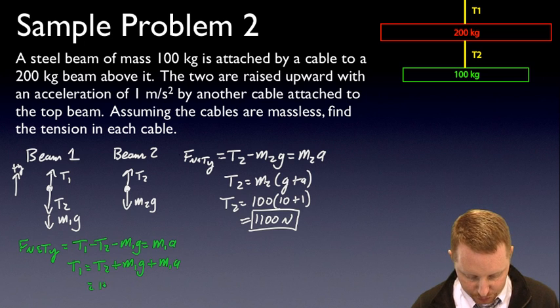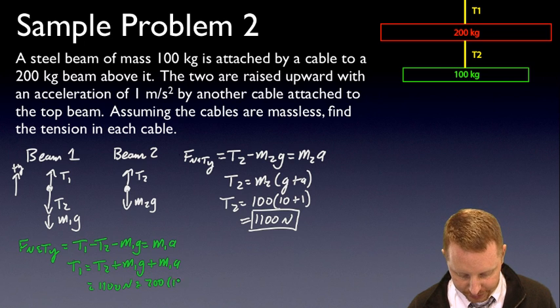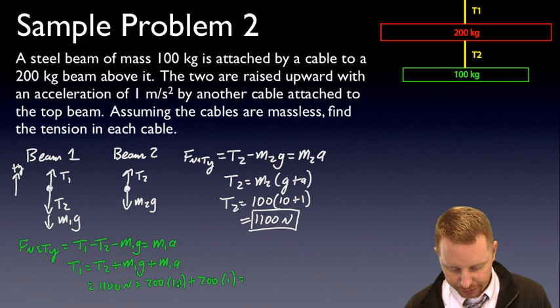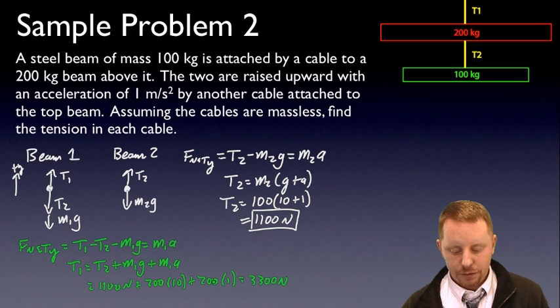Or in this case T2 was 1100 newtons, plus M1, in this case that's 200 kilograms, times our G value 10, plus M1, 200, times A, 1, or I come up with 1100 plus 2000 plus 200, should give me 3300 newtons. Alright, so how to use Newton's second law to solve for the tension in a problem like this.